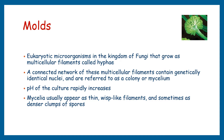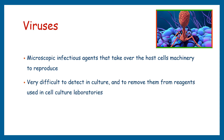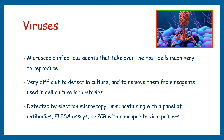These spores have an ability to survive in extremely harsh environments in their dormant stages, and they become active when they encounter suitable growth conditions. Viruses are microscopic infectious agents that take over the host cell machinery to reproduce. Their extremely small size makes them very difficult to detect in culture and to remove from reagents used in cell culture laboratories. Because most viruses have very stringent requirements for their host, they usually do not adversely affect cell cultures from species other than their host. However, using virally infected cell cultures can present a serious health hazard to laboratory personnel, especially if human or primate cells are cultured. Viral infection can be detected by electron microscopy, immunostaining with a panel of antibodies, ELISA assays, or PCR with appropriate viral primers.